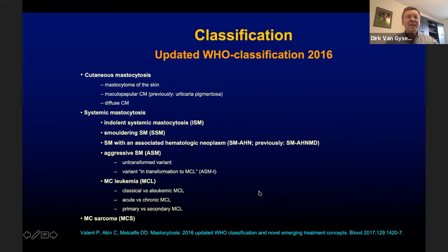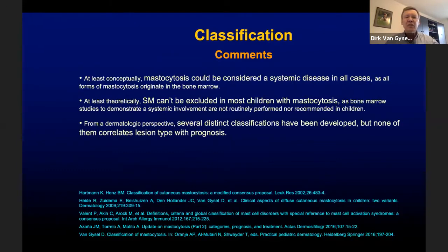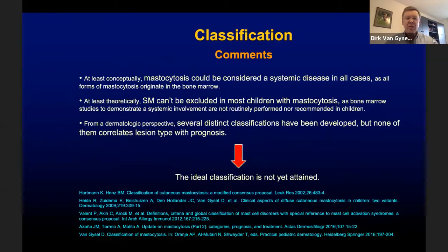Some comments can be made on this classification. As all forms of mastocytosis originate in the bone marrow, at least conceptually, mastocytosis could be considered a systemic disorder in all cases. Since bone marrow studies are not routinely performed or recommended in children, systemic mastocytosis cannot be excluded in most children. From a dermatologic perspective, several distinct classifications have been developed, but none correlates lesion type with prognosis. So the ideal classification is not yet attained.